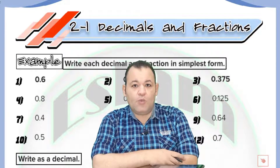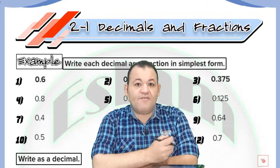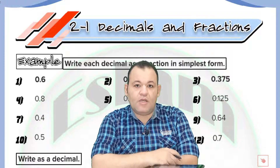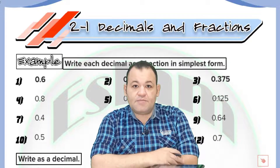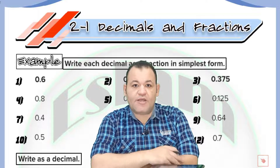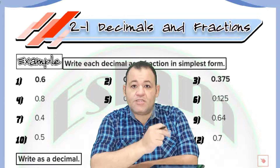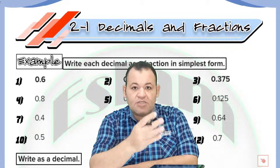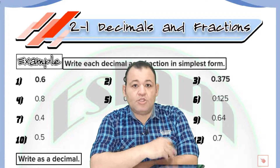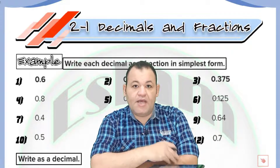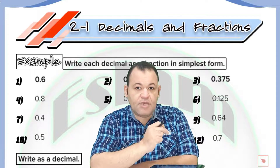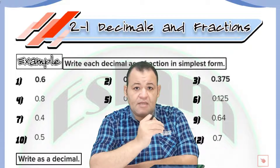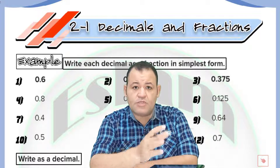A fraction is a part of a whole one — we have a relation between two numbers, the part to the whole. A decimal is a type of fraction, but with a denominator equal to ten, hundred, thousand, and so on. So the fraction is a part of a whole one, and the decimal is a fraction with denominator equal to ten, hundred, thousand, and so on.